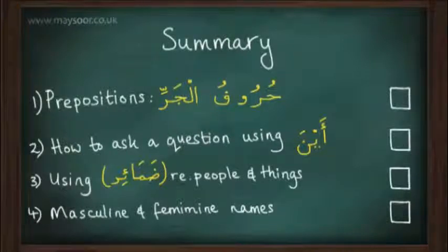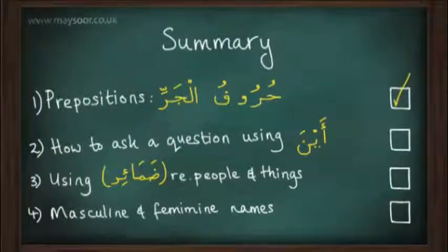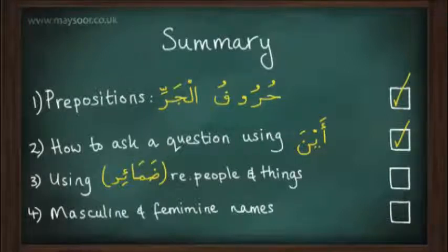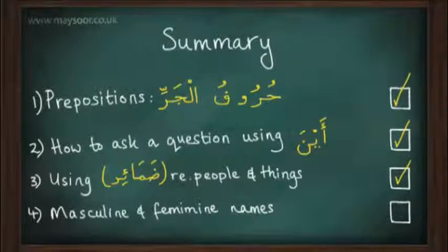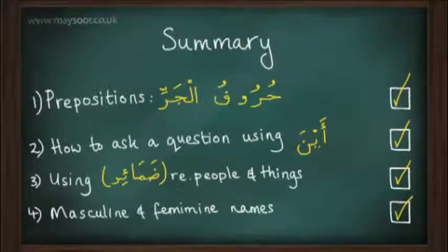In summary, we've looked at: prepositions — huruf al-jar — and what they do once they enter upon a noun; how to ask a question using Aina; using domair — pronouns — regarding people and things; and the different endings of masculine and feminine names. I hope you've enjoyed and more importantly benefited from today's lesson. I ask Allahu ta'ala that He accepts this small effort. Wajazakumullahu khaira. Assalamu alaikum warahmatullahi wabarakatuh.